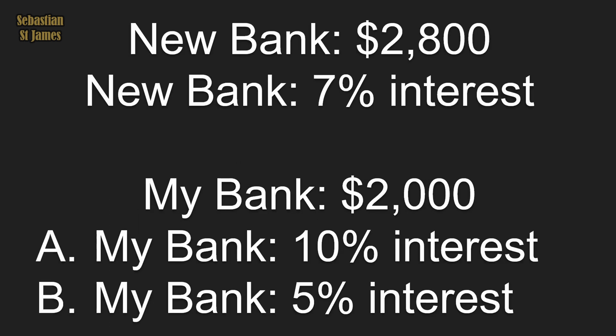My bank is scheming and conniving, trying to underpay me based on those figures. The answer clearly is to go to the new bank — you'll make more profit. So which answer, A or B, actually had us move to the right bank? The new bank is $2,800 or 7% interest; my bank is $2,000. If you said option A, my bank was paying 10%. If you said option B, my bank was paying 5%.